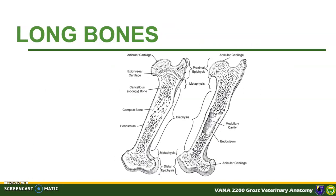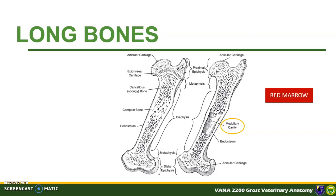Let us now discuss the basic anatomy of a bone, focusing on the parts of a long bone. Compact, dense, or cortical bone is the hard layer that constitutes the exterior of most bones and forms the entire shaft of long bones. Cancellous or spongy bone is composed of spicules arranged to form a porous network; the spaces are usually filled with marrow. The medullary cavity or bone marrow cavity is the space surrounded by the cortex of a long bone. In young animals, it is filled with red marrow, or hematopoietic tissue, which gradually is replaced by yellow marrow, or fatty tissue, as the animal ages.